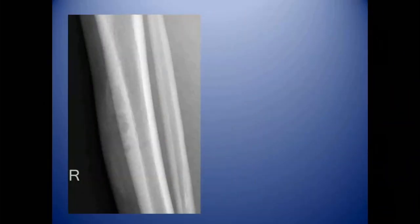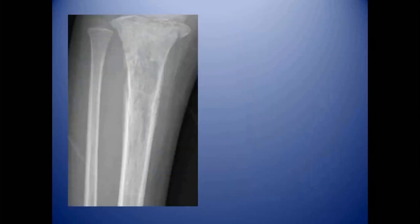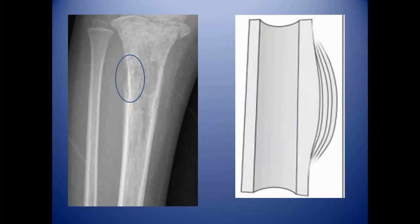This case of osteofibrous dysplasia involving the tibia shows a septated type of periosteal reaction. Those were the non-aggressive patterns. Now in the aggressive category, this case of Ewing sarcoma shows a multi-layered or onion-skin type of periosteal reaction, which is also interrupted in this area.